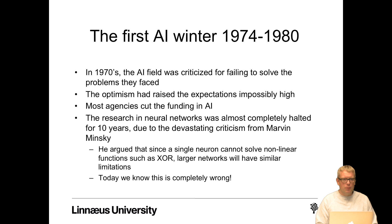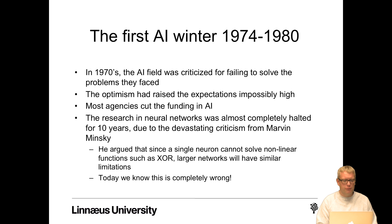After those golden years, the first AI winter appeared between 1974 and around 1980. The AI field was criticized for failing to solve the problems it faced. The optimists had raised expectations impossibly high — we couldn't develop a general intelligence then and still cannot. Most agencies cut funding, and research in neural networks was almost completely halted for 10 years due to devastating criticism from Marvin Minsky, who argued that since a single neuron cannot solve non-linear functions, larger networks would have similar limitations. Today we know that is completely wrong.